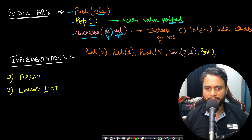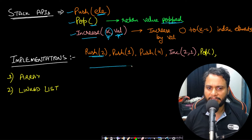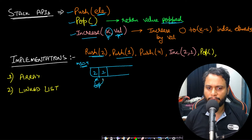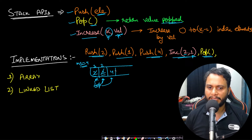We can implement this with an array or a linked list — both have the same time complexity and efficiency. Let's see a simple example. We push 2 into the array with max size 4. Then push 1 and push 4, updating the top pointer each time. When increment comes for the first two items with value 1, two and one become three and two. Then pop removes the top item 4 and returns it.